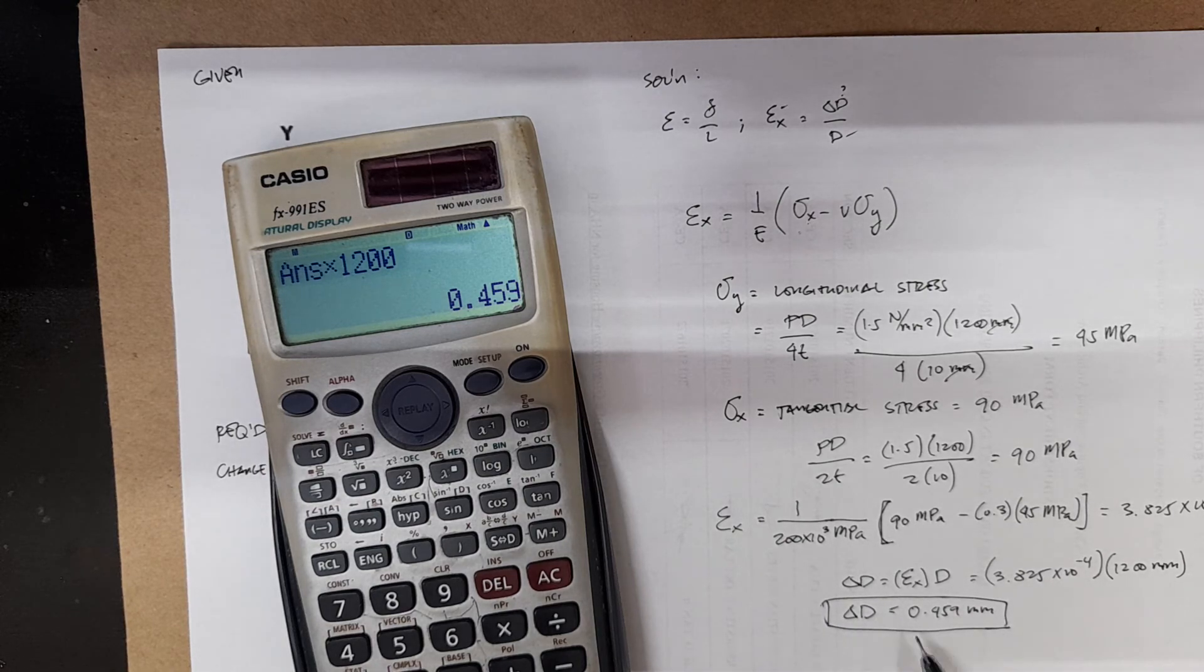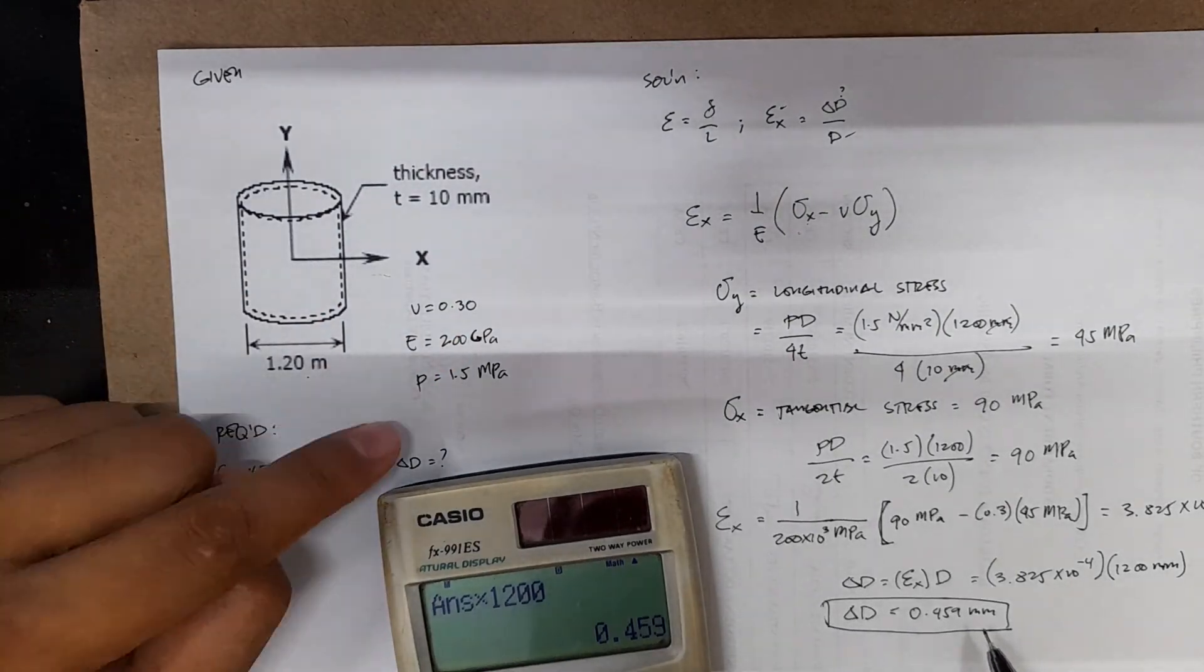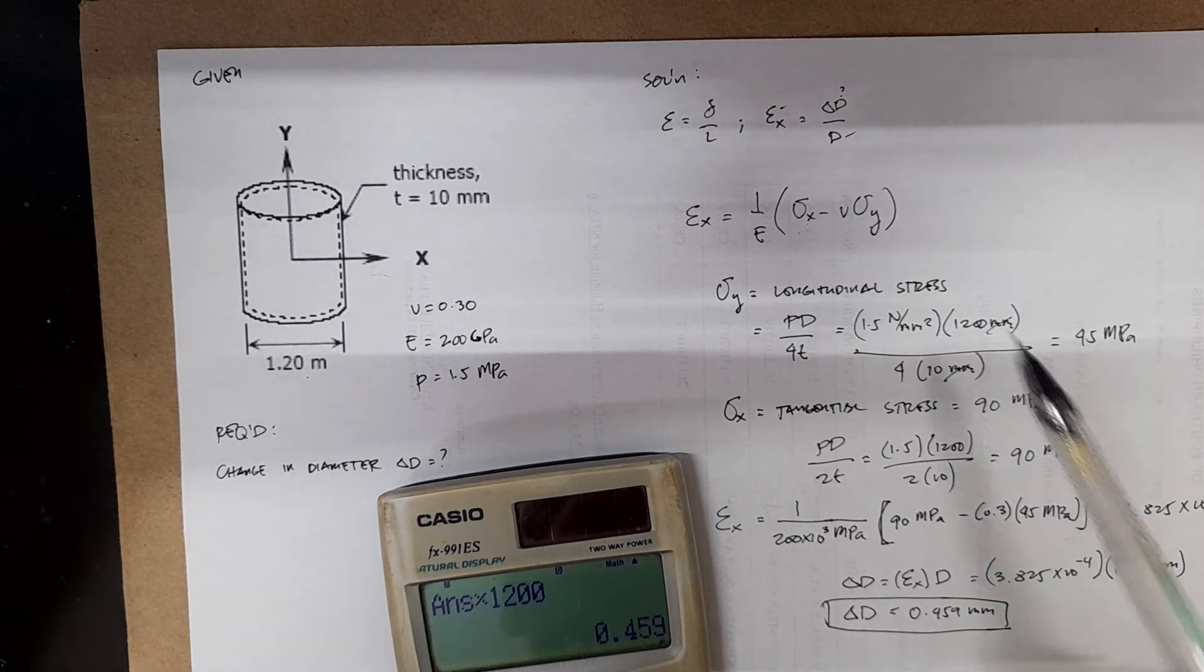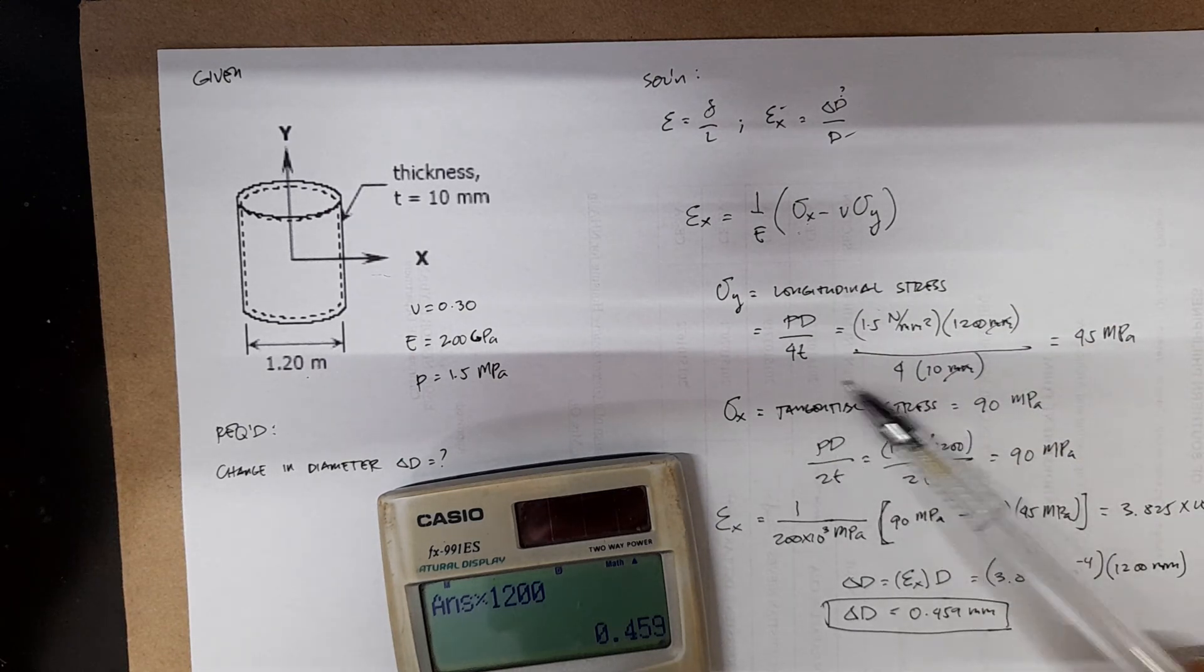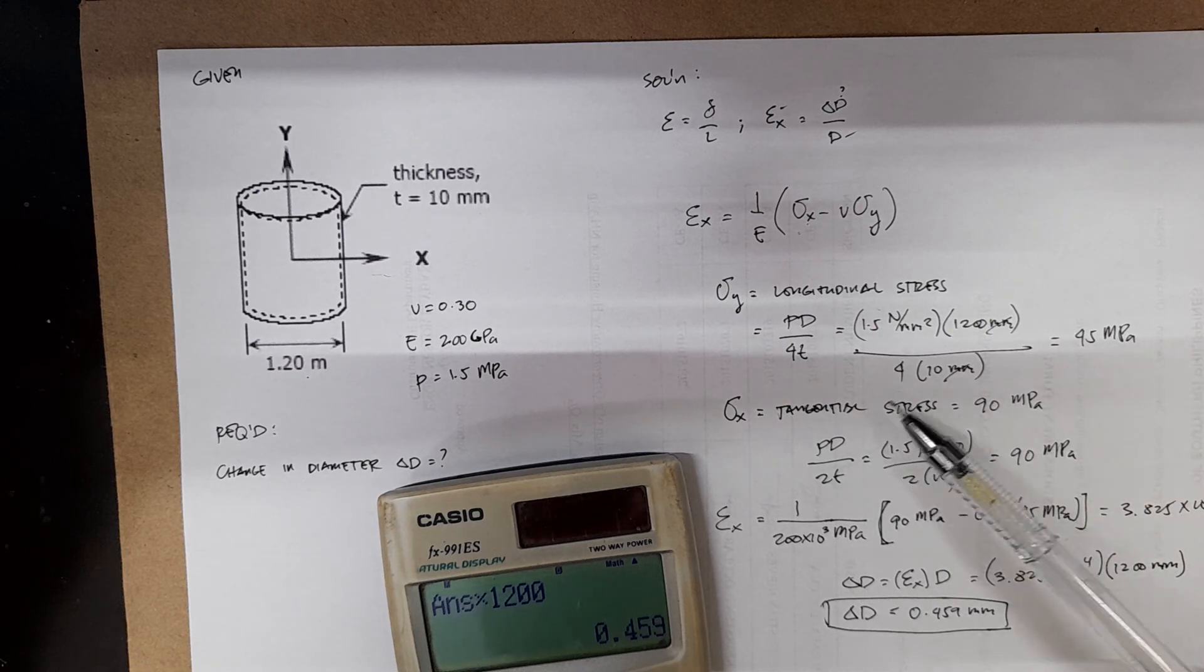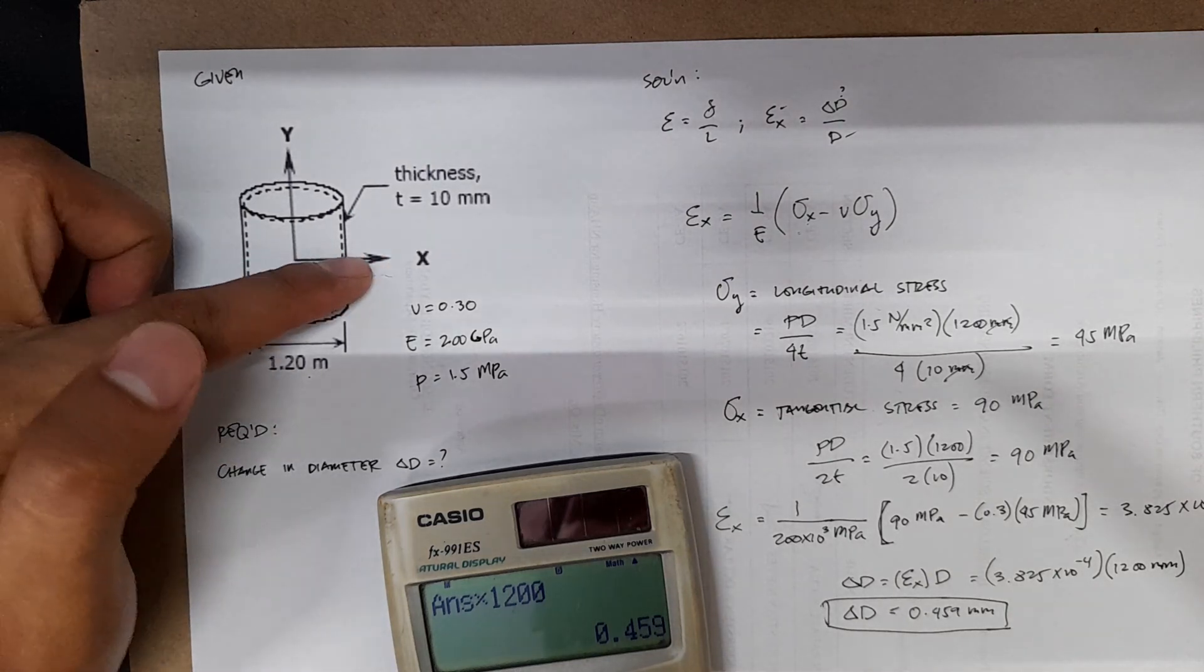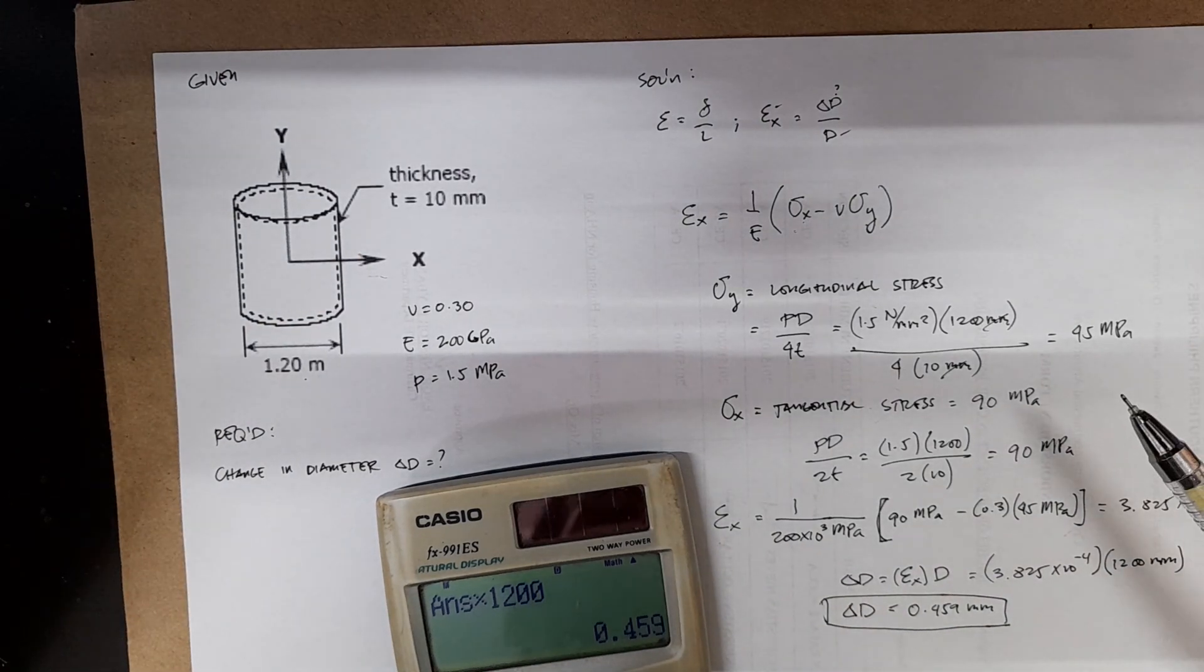Therefore, it's a positive change in diameter. Your drum has expanded due to the presence of this 1.5 megapascals internal pressure. I hope you, again, just a review, this one, the longitudinal stress and the tangential stress. Again, tangential is just twice your longitudinal stress. And then since we're concerned with the diameter, it's in the x-direction or x-axis. That's why we look for the strain along the x-direction.